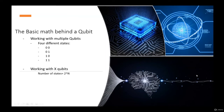Since we have two qubits, we'll have the combinations: 0,0 and 0,1 and 1,0 and 1,1. We need to understand that a qubit can be in the state 0 or the state 1 at the same time. So basically with two qubits, it's possible to have four states simultaneously.